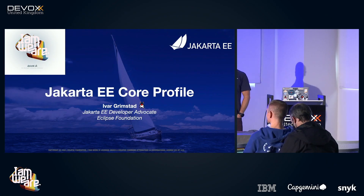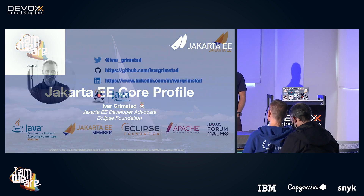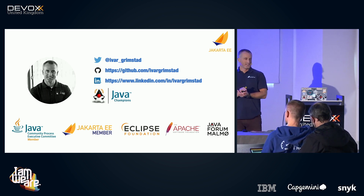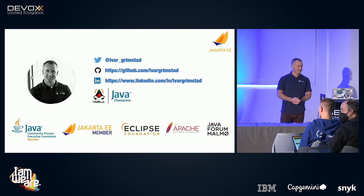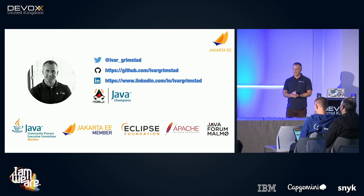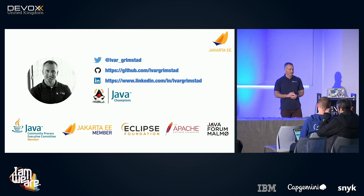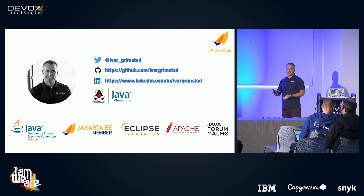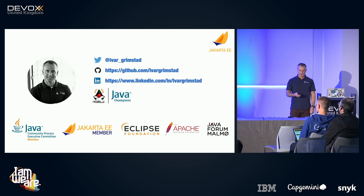Welcome and hello DevOps. My name is Ivar Grimstad. I'm the Jakarta EE developer advocate at the Eclipse Foundation, and today I'll be talking about the Jakarta EE core profile and also looking at what's coming in Jakarta EE 10, which core profile is a part of. I'm involved in a bunch of open source community, including as the Eclipse Foundation representative on the Java Community Process Executive Committee, a committer at Apache NetBeans, and I run a local Java user group in Malmö, Sweden.